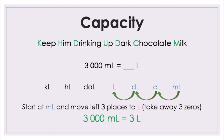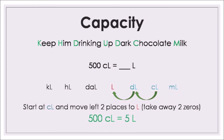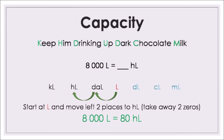One liter is how many milliliters? Go to liter, move three places to the right, multiply by 1,000 — one liter is 1,000 milliliters. Going the other direction: 3,000 milliliters is how many liters? Move to the left, divide by 1,000 — 3,000 milliliters is 3 liters. 500 centiliters is how many liters? Move two places to the left, divide by 100 — 500 centiliters is 5 liters. 8,000 liters is how many hectoliters? Move two places to the left, divide by 100 — 8,000 liters is 80 hectoliters.